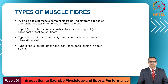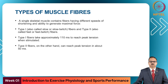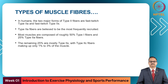There are different types of muscle fibers. A single skeletal muscle may have fibers with different speeds of shortening and different abilities to generate maximal force. They are generally called type 1 or slow twitch fibers and type 2 or fast twitch fibers. Type 1 fibers take approximately 110 milliseconds to reach peak tension, while type 2 fibers can reach peak tension in about 50 milliseconds.